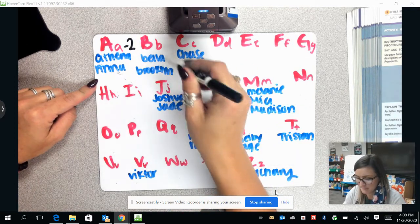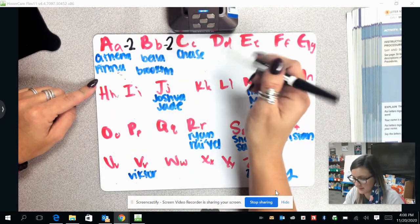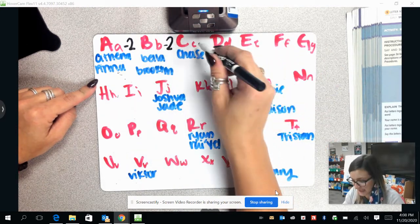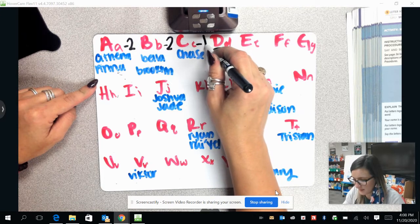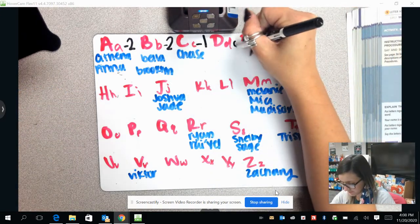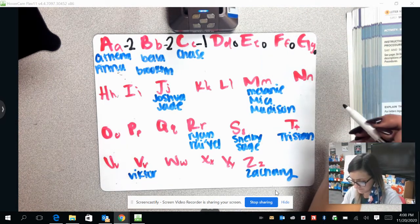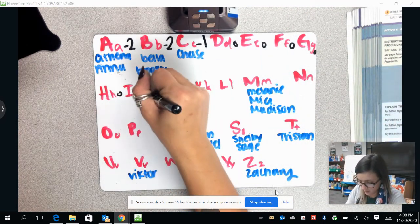Under B, we have Bella and Brooklyn. That is two people that start with letter B. Under C, we have Chase. That is one person that starts with the letter C. No people for D or E or F or G or H or I.